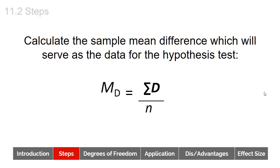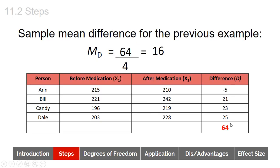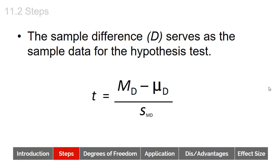After we have the difference scores, we need to find the average difference score. We take the sum of those difference scores and divide by the total n. The sum of the difference scores here is 64, and there are four participants, so the average difference score is 16. The sample difference serves as the sample data for the hypothesis test. We have a difference score of 16, but our null hypothesis is that there would be no difference, so that represents zero. Our numerator is therefore 16 minus zero, which is 16.